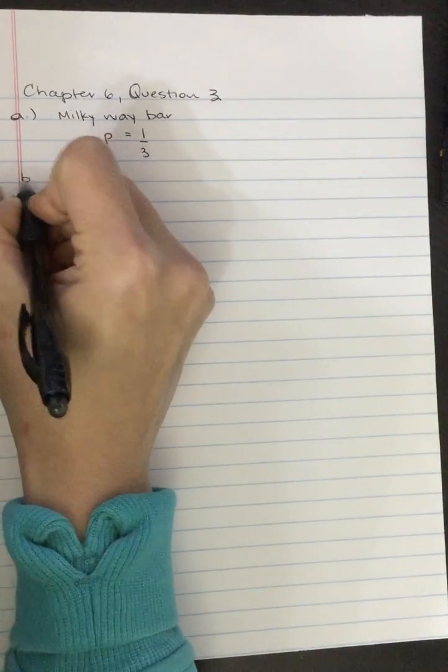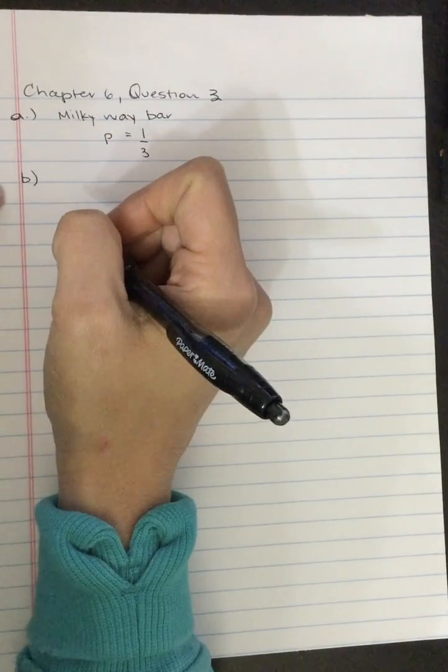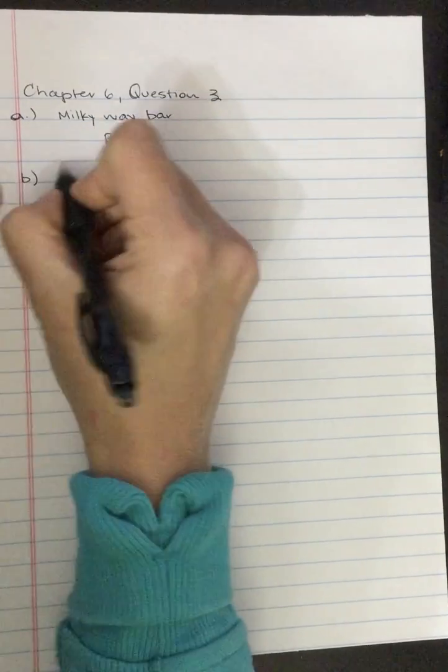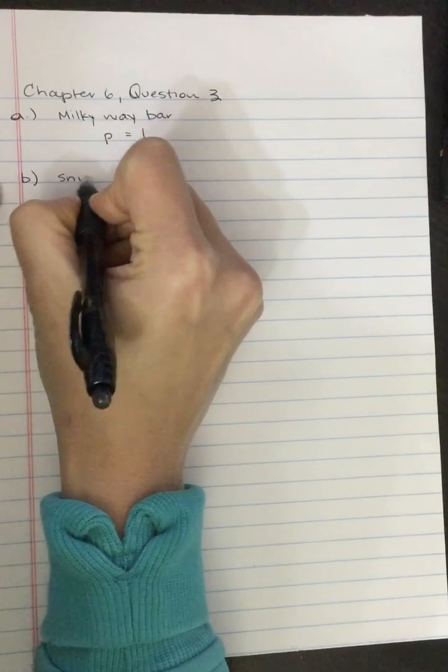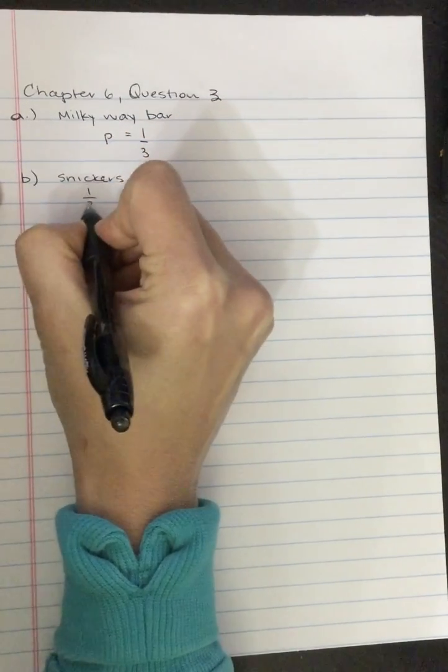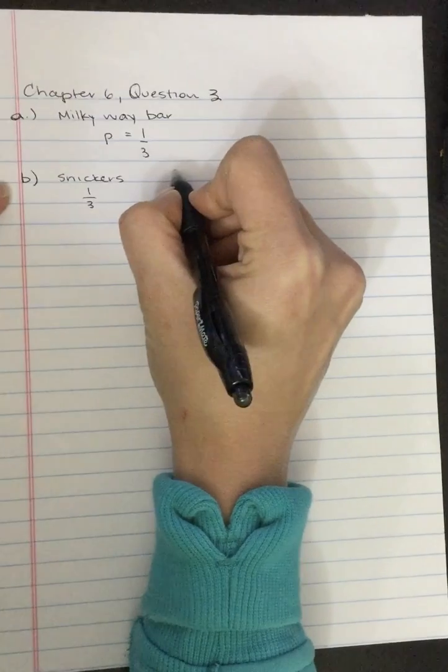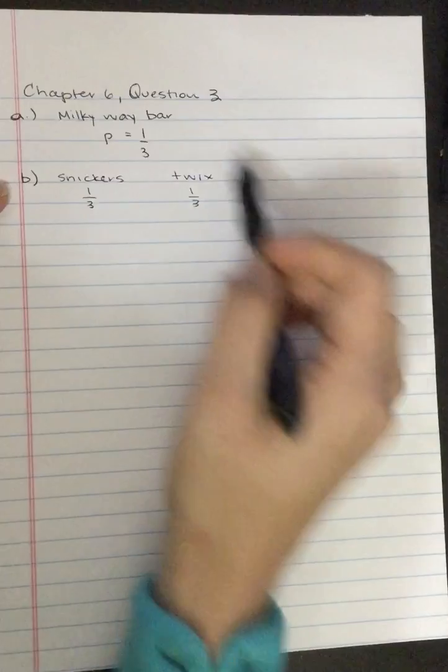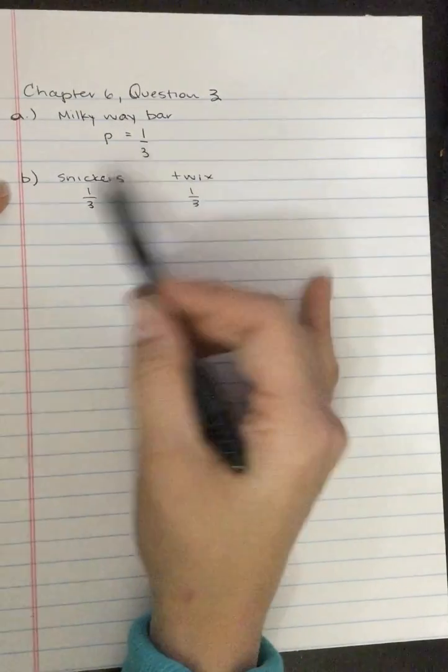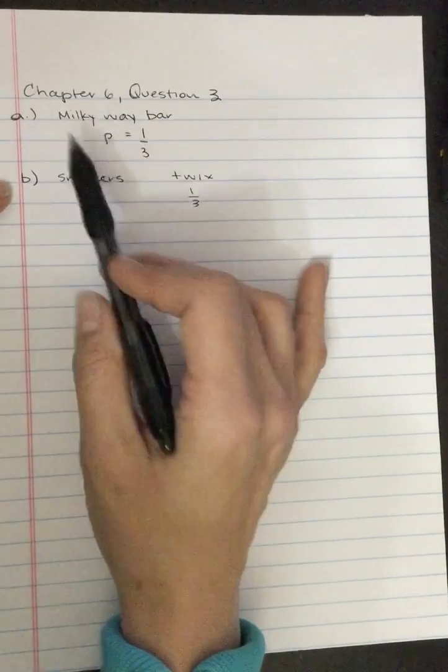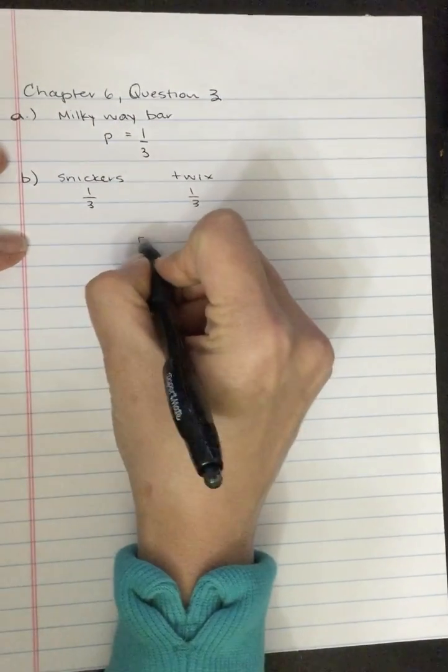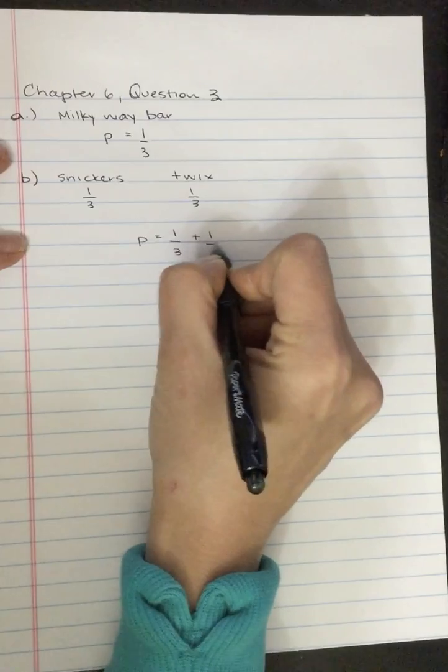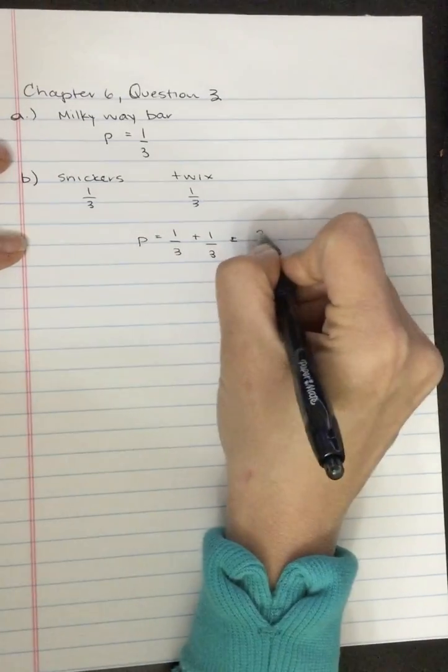B. What is the probability of selecting either a Snickers or a Twix bar? Snickers, you've got a one-third chance, and Twix, you've got a one-third chance. Since either of those will work, the only one that doesn't fit is the Milky Way bar, then your probability is equal to the sum of those individual probabilities, so it's two out of three.